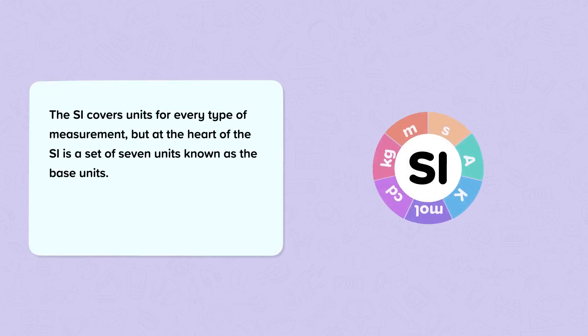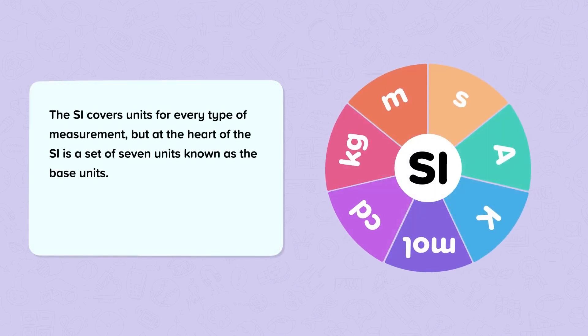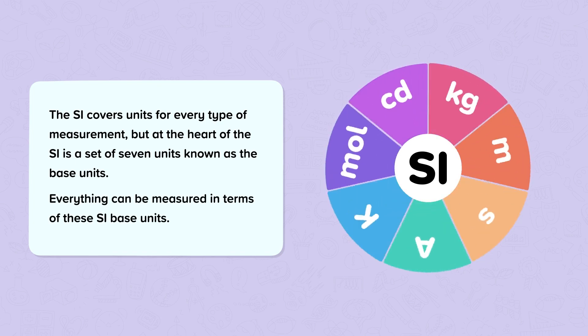The SI covers units for every type of measurement, but at the heart of the SI is a set of seven units known as the base units. Everything can be measured in terms of these SI base units.